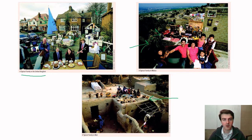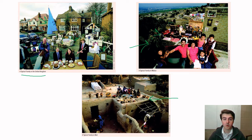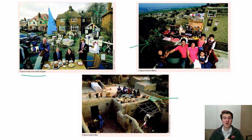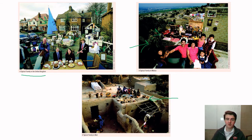Clearly, there is a difference in incomes and wealth across the world. Mankiw takes this whole chapter to talk about why some countries economically grow and prosper and some don't. So let's take a look at this together.